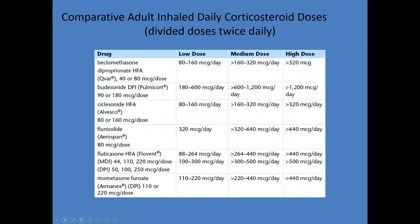Comparative adult inhaled daily doses of corticosteroids — don't spend a ton of time on this, but have some vague familiarity with the dosing. The main thing the NBRC is going to want you to know is that for asthmatic patients you would start them on systemic steroids and then traverse them over to one of these inhaled formulations as their condition improves.